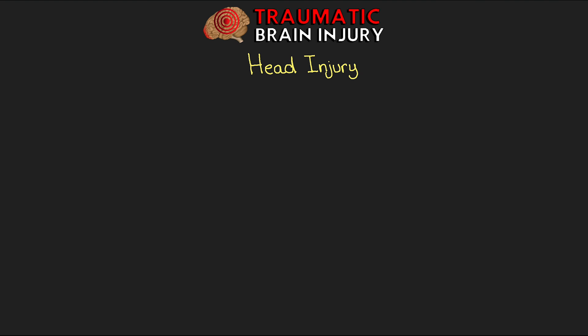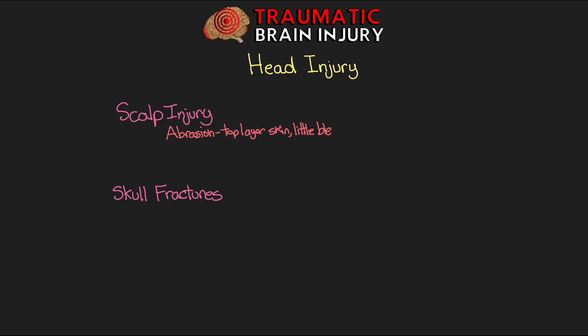I want to talk quickly about something we call head injury. This is a more broad term that technically encompasses brain injury, but also includes scalp injuries and skull fractures. For scalp injury, this covers things like an abrasion — the top layer of skin removed with a little bleeding — to a contusion, where the skin isn't broken but we have a hematoma, and then a laceration, where the scalp is actually torn. The scalp is well supplied with blood, so if you do see a scalp laceration, you might have extensive bleeding requiring some sort of suturing.